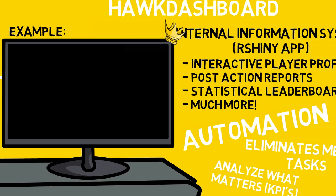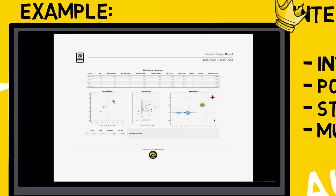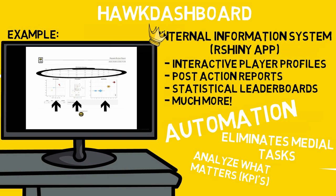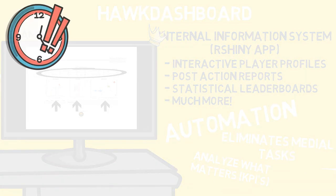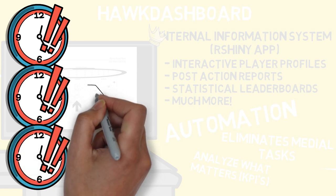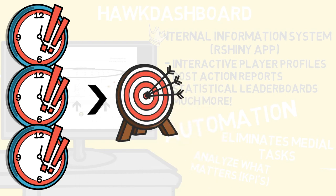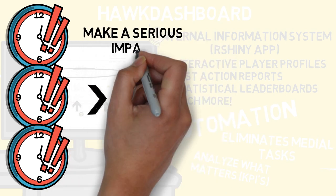The most common report Hawk Dashboard generates is a bullpen report for pitchers. This report takes a spreadsheet as an input and creates a page based on the code put in place. It summarizes each pitch's metrics, shows the pitch movement plot, location plot, and a violin plot to show the distribution of spin efficiency. There's also a spot on the report for players and staff members to put comments to assist with the feedback loop. Analyzing all of the data we talk about on this channel can be very time consuming, but learning to code allows you to spend more time focusing on the things that matter and make a serious impact on team performance.